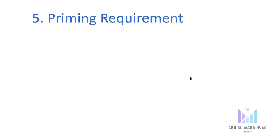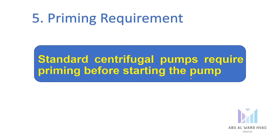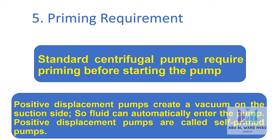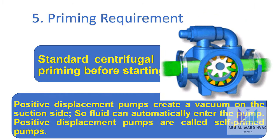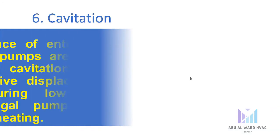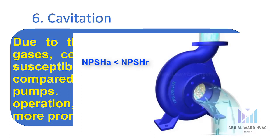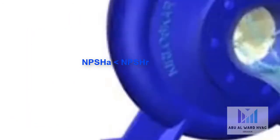The fifth aspect is priming requirement. Standard centrifugal pumps require priming before starting. Positive displacement pumps create a vacuum on the suction side so fluid can automatically enter the pump — positive displacement pumps are therefore called self-priming pumps. Due to the presence of entrained gases, centrifugal pumps are more susceptible to cavitation compared to positive displacement pumps.